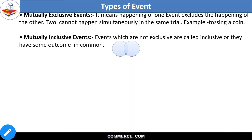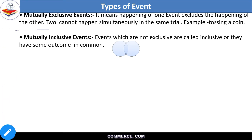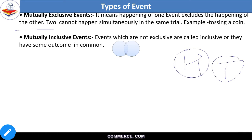Now mutually exclusive events — it means happening of one event excludes the happening of the other one. So in one event, the other event cannot happen simultaneously. For example, with a coin toss, if head comes then tail cannot come at the same time. So these two are mutually exclusive — if one happens, the other is excluded. This is mutually exclusive.